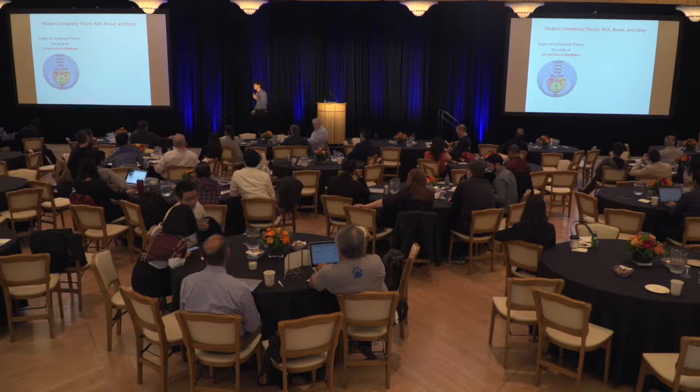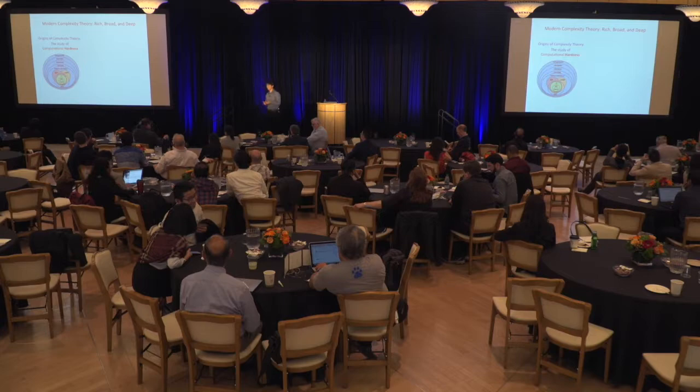For many of you who know complexity theory, I imagine the first picture that comes to mind is a Venn diagram with P and NP and other complexity classes in them. This is still very much the core agenda of complexity theory, but modern complexity theory has really grown to encompass a lot more.